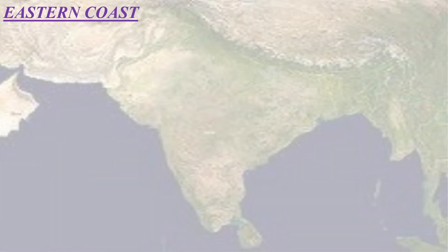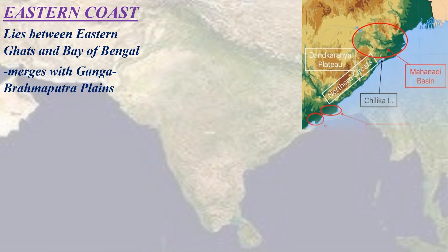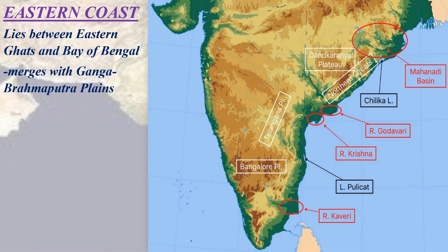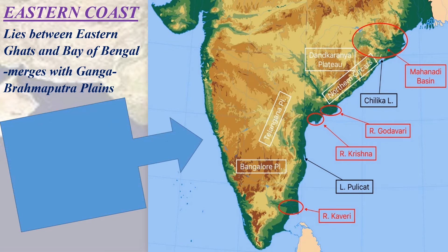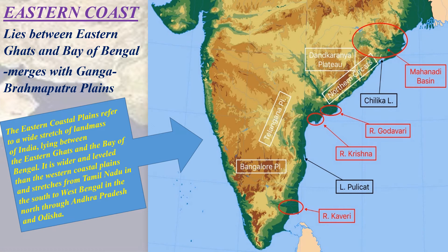Moving further, the eastern coastal plains lie between the eastern ghats and the Bay of Bengal. These plains are wider compared to the western coastal plains and are washed by the Bay of Bengal. They extend from the mouth of the Ganga in the north to Kanyakumari in the south. Large river deltas of all major Deccan rivers form in this region.